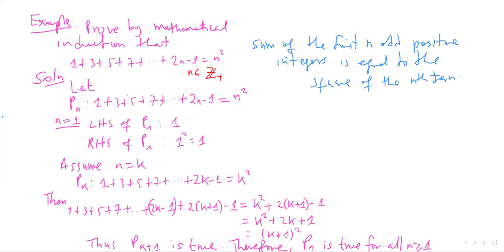We want to show that this assertion is true. For the base step, n is equal to 1. The left-hand side gives the first term, which is 1. On the right-hand side, substituting n equal to 1 gives 1 squared, which is also 1. So the base step p1 is true.